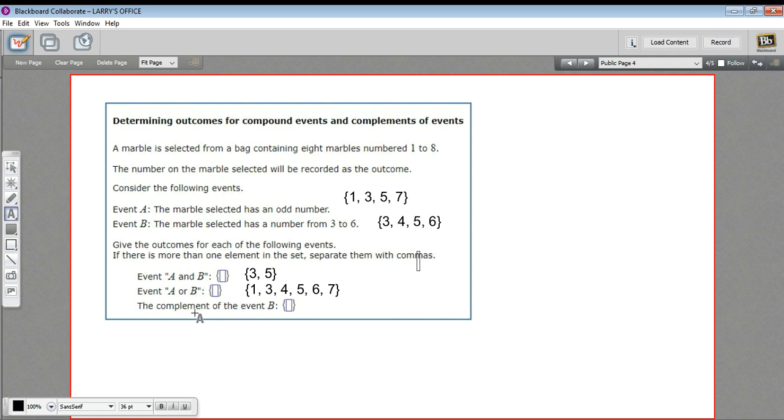All right. Now, let's determine the complement of event B. So event B is this one right here. And the complement is everything that's not in there. So three, four, five, and six are in there, but one is not, two is not, and then seven is not, and eight is not. So those are all the other marbles besides what's in B. So this is the complement of B. So that is a little bit of work in writing the outcomes for compound events and complements.